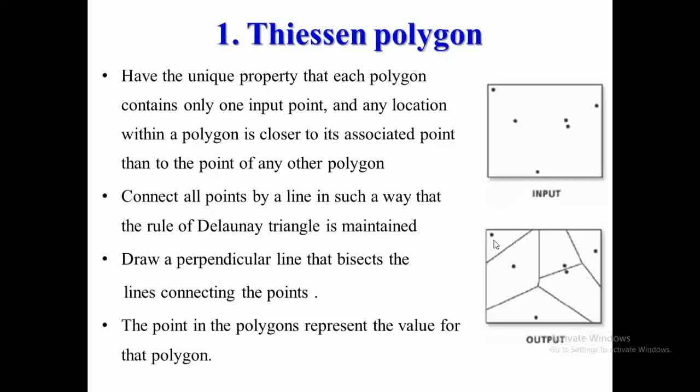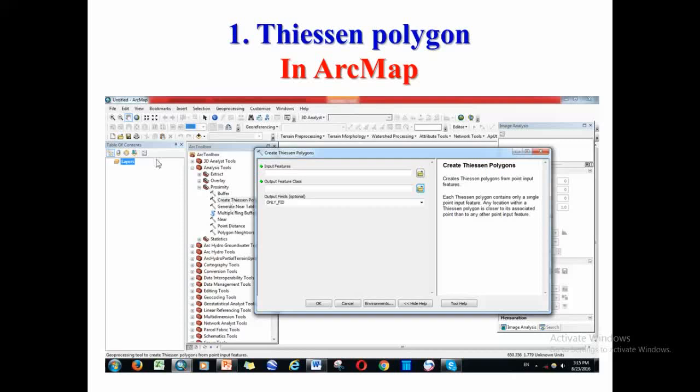Every point takes the intersection of the triangles of the perpendicular bisectors according to the Thiessen polygon method. This is totally geometric and is usually used for estimating the area distribution — the area representation of those points. In ArcMap you can find Analysis Tools, under Proximity, and then find Create Thiessen Polygon.